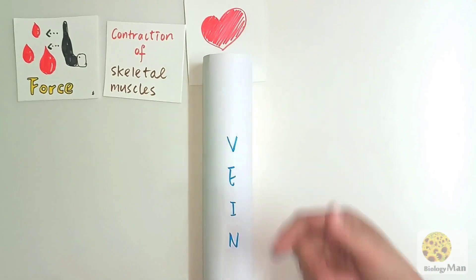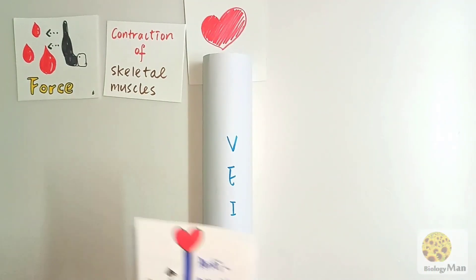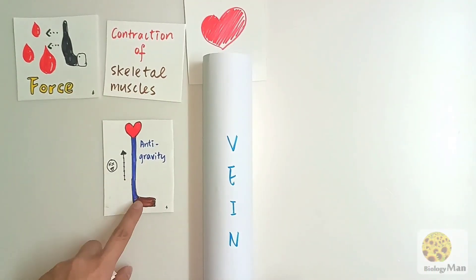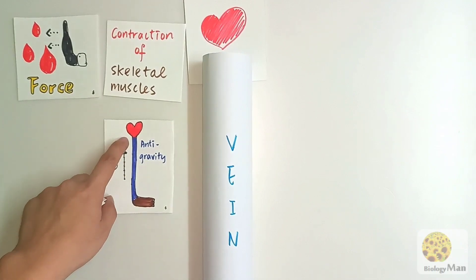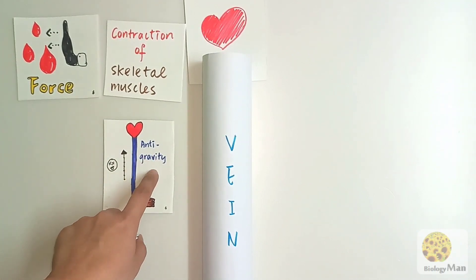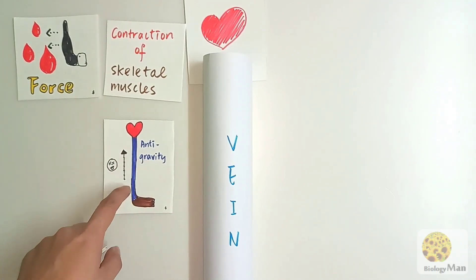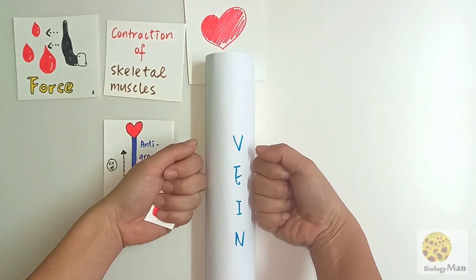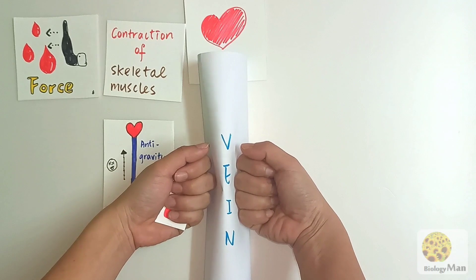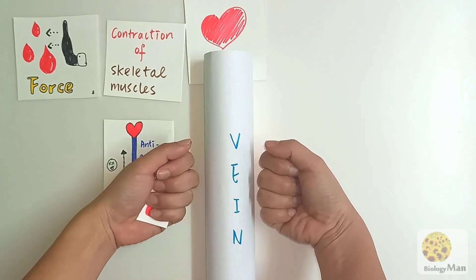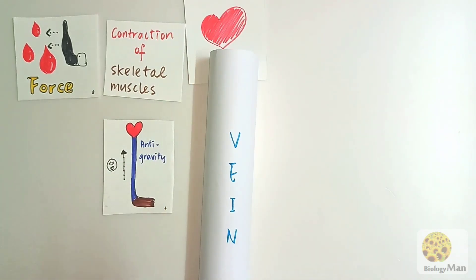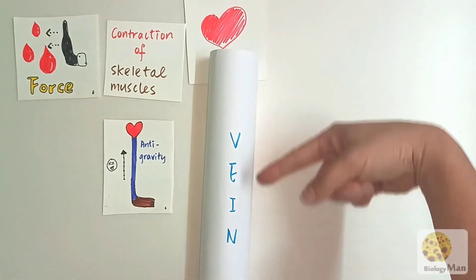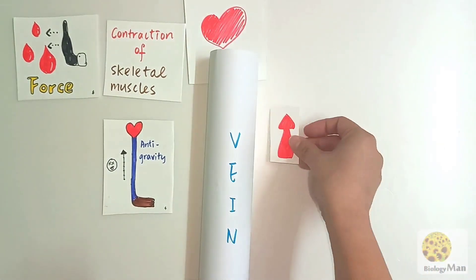The vein is connected to the heart, and its major function is to send blood back to the heart. Sometimes it needs to work anti-gravity. When the skeletal muscle contracts, the vein will be squeezed — but wait, there should be a problem. The contractions will push the blood both up toward the heart and down back to the lower body.